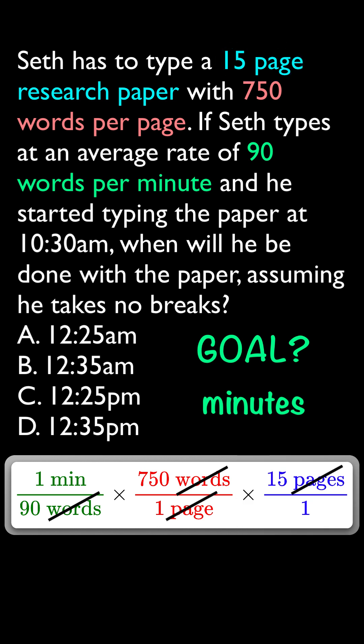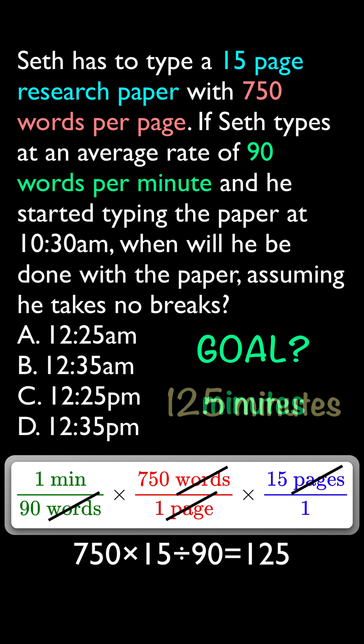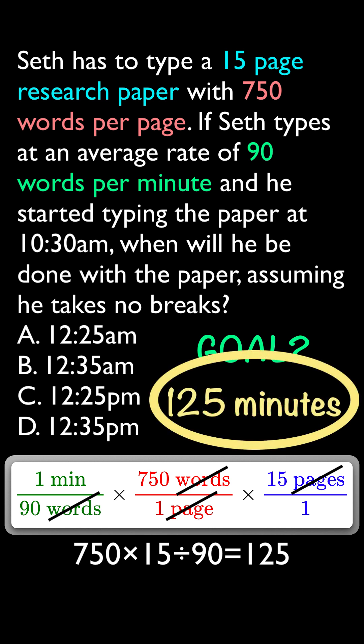The only unit we have not canceled out is minutes. With dimensional analysis, you multiply all of your top numbers and divide by all of your bottom numbers. When you do that, you get 125. This represents 125 minutes because that was our goal — that's what we started with, and we got rid of all the other units. Minutes is the only thing we have left.